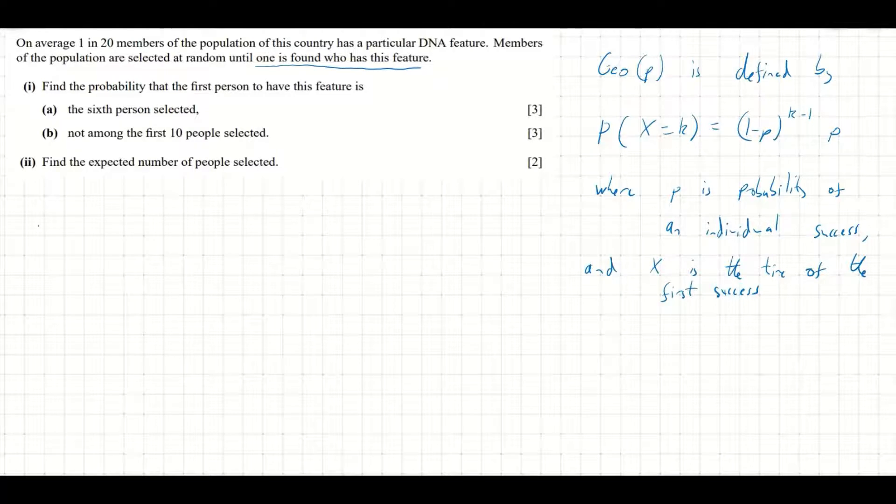So let's have a look. In our example, we're looking at finding out what the probability of the first person has the feature is the sixth person. Well, we've got one in 20 members of the population have a particular DNA feature. So X, the time of the first success, has the distribution Geo(0.05). One in 20 is 0.05. And it's asked us for the probability that X equals 6, the sixth person.